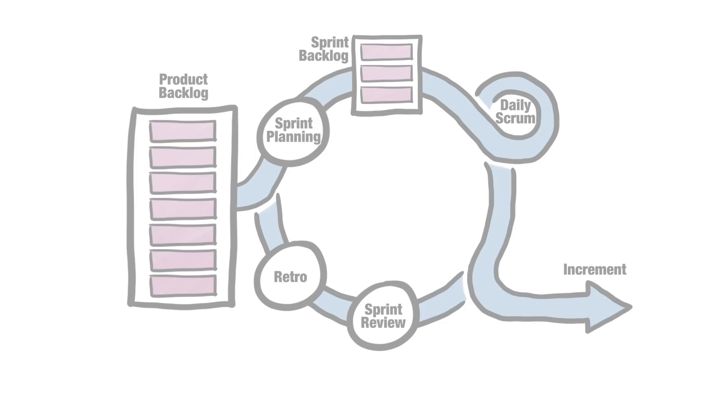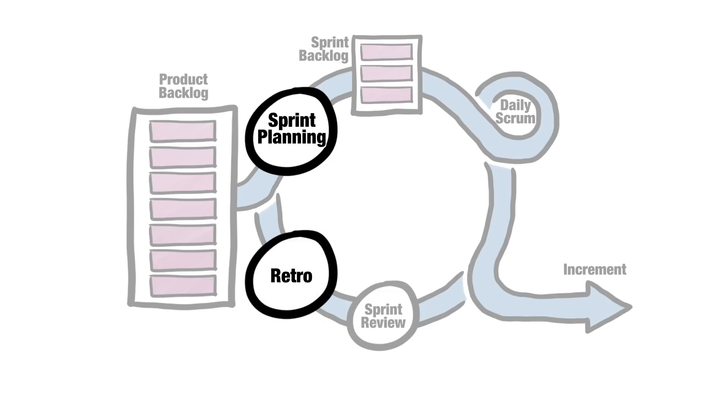The Sprint Retrospective is the last of Scrum's five events. And if Sprint Planning marks the beginning of a Sprint, then the Sprint Retrospective marks its end. It is, as the Scrum Guide reminds us, an opportunity for the team to inspect itself.